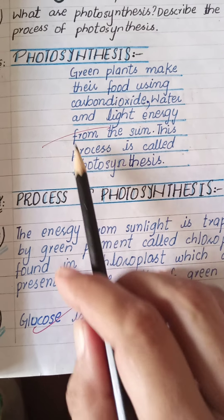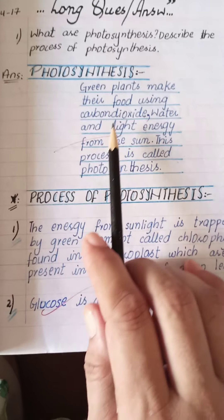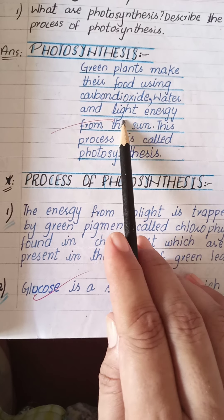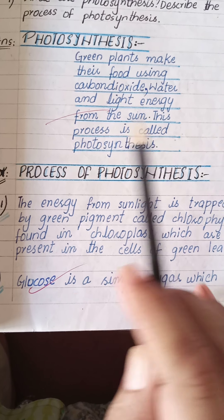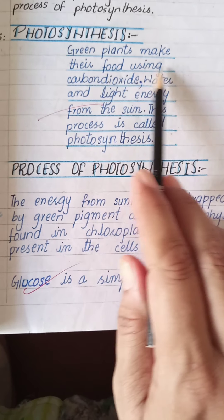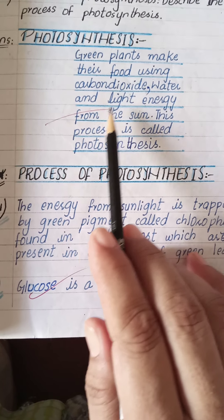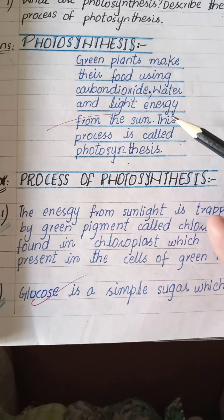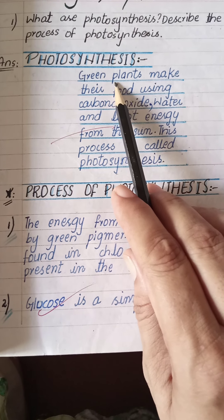You must give the heading of photosynthesis and this definition will be centralized. Green plants make their food using carbon dioxide, water, and light energy from the sun. This process is called photosynthesis. Food manufacturing in plants is called photosynthesis, and this process occurs only in green plants.